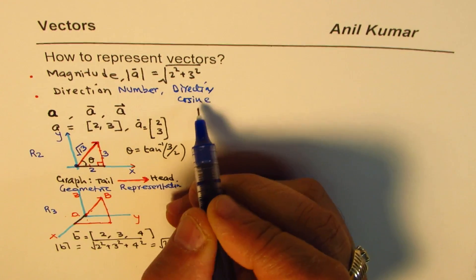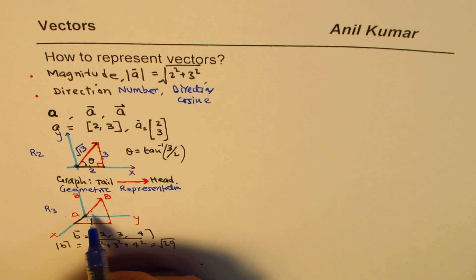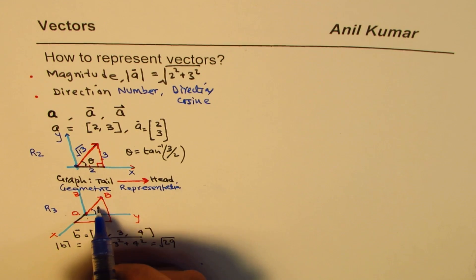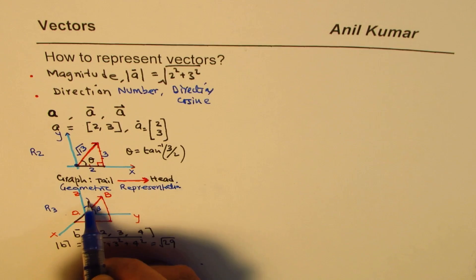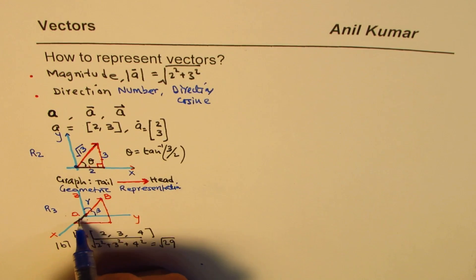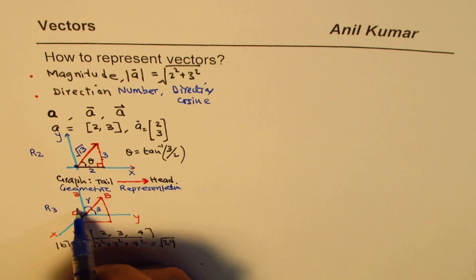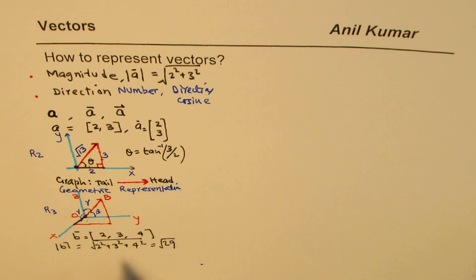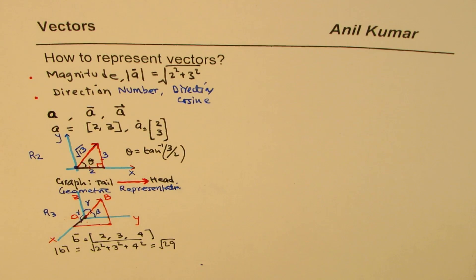In R3, the component along each axis is the cosine component. We use angles alpha, beta, and gamma with the X, Y, and Z axes respectively. The cosine of each angle gives the direction — so they are called direction cosines. This is mainly used in R3.